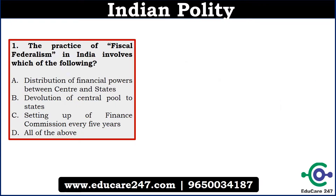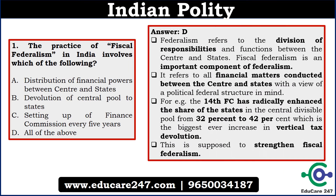The first question is: The practice of fiscal federalism in India involves which of the following? Option A is distribution of financial powers between center and state. Option B is devolution of central pools to states. Option C is setting up of a Finance Commission every five years. And Option D is all of the above. The answer is D — A, B, and C are all part of fiscal federalism.